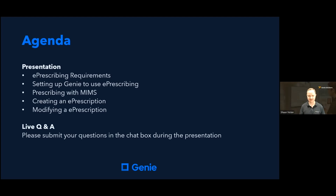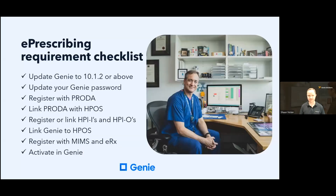To use e-prescribing there are a fairly significant number of steps, so I'm going to spend a few minutes going through this checklist of requirements. First, you need to update Genie to the latest version. You may need to update your Genie password if it doesn't match security requirements. After that, register and link a number of items outside of Genie — register with MIMS and ERX — then activate e-prescribing in Genie.